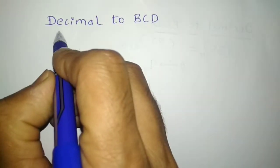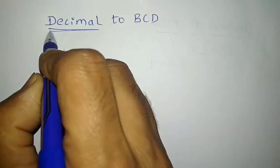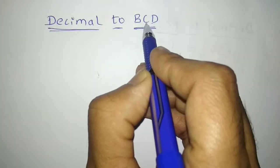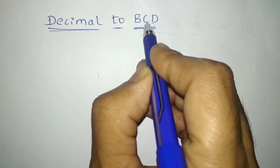Welcome to ng classes YouTube channel on converting a given decimal number into its equivalent BCD. So BCD stands for binary coded decimal.